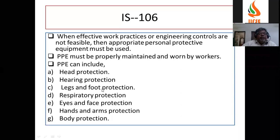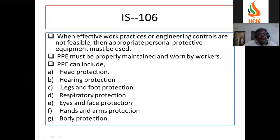The safety beds and safety harness beds during the doping procedures. PPE includes head protection, hearing protection, leg and foot protection, respiratory protection, eyes and face protection, hands and arms protection, and body protection.